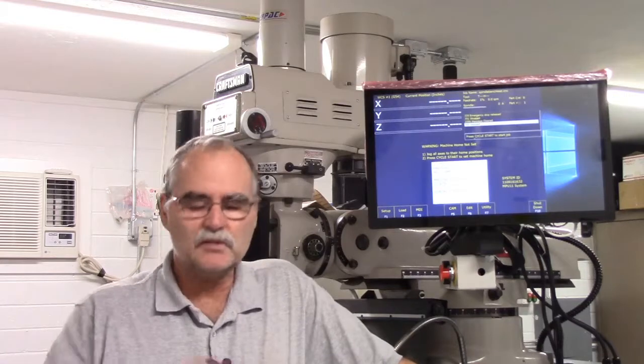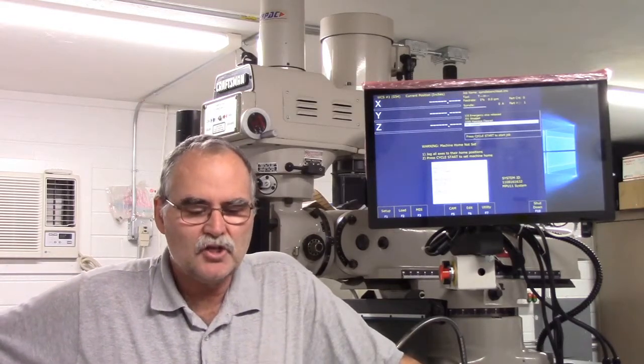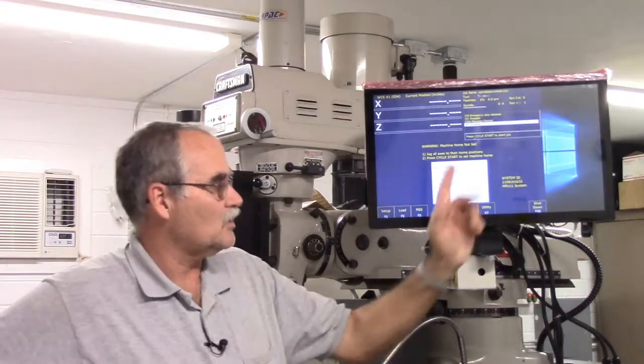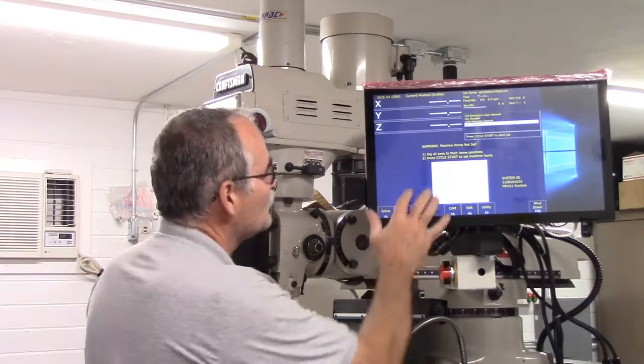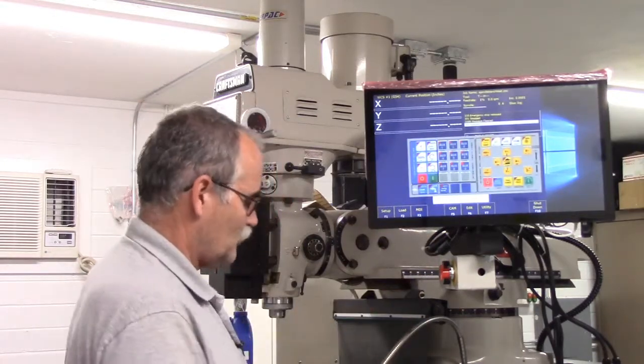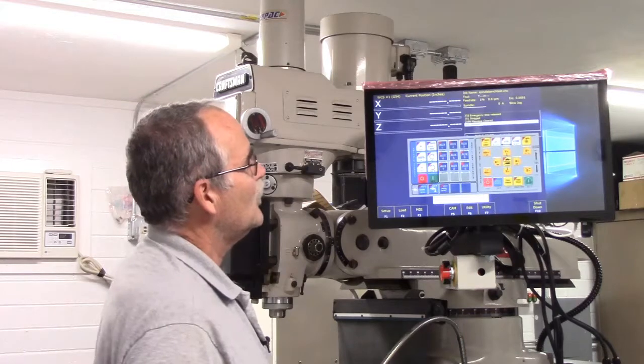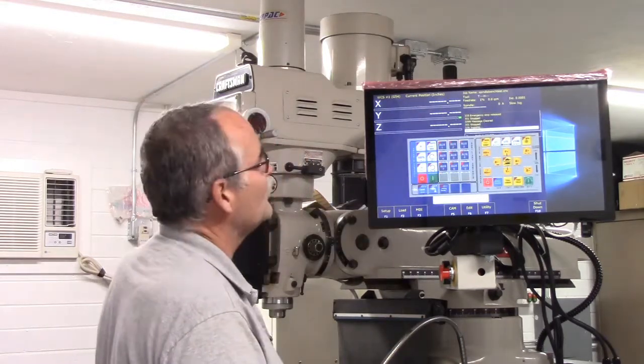When I went to jog the motors, when you use a PC it's Alt-J that brings up the jog screen. At this point you can jog the axis. Let me set the feed rate up a little bit. It defaults to 1%, so I'm going to set it up to 10%.